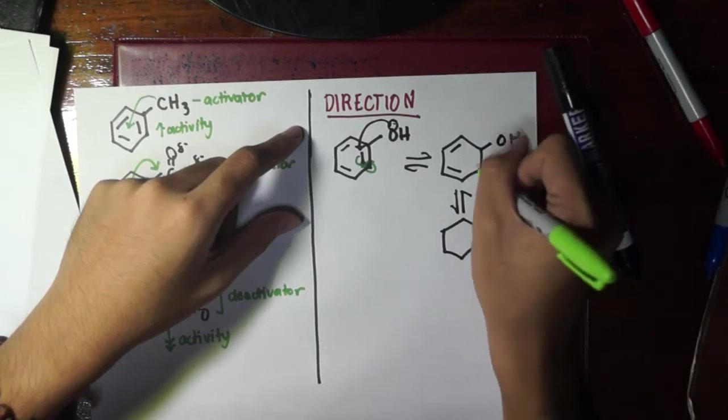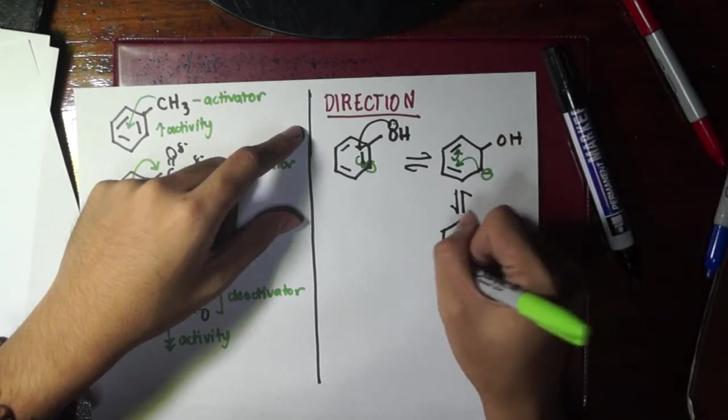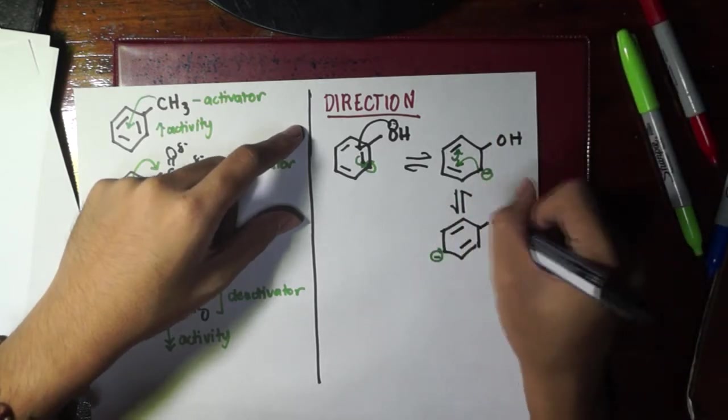Then what happens is at a certain point this charge jumps to the other side, and it actually goes to this position, and the double bonds will rearrange in this manner. The OH is still here.